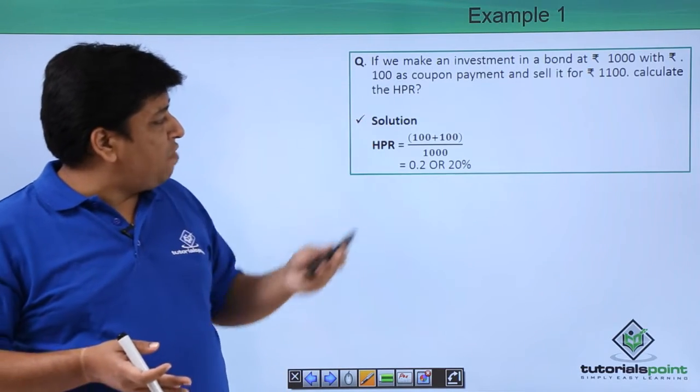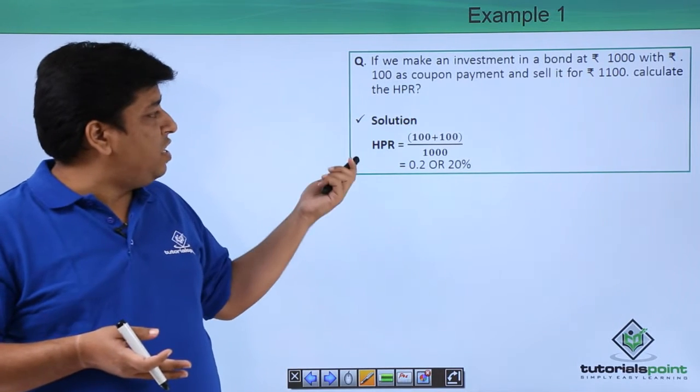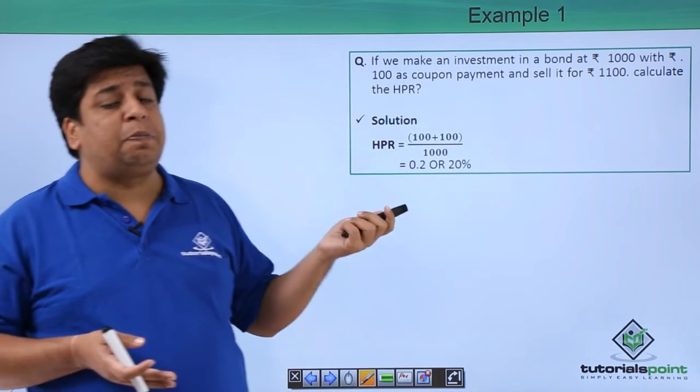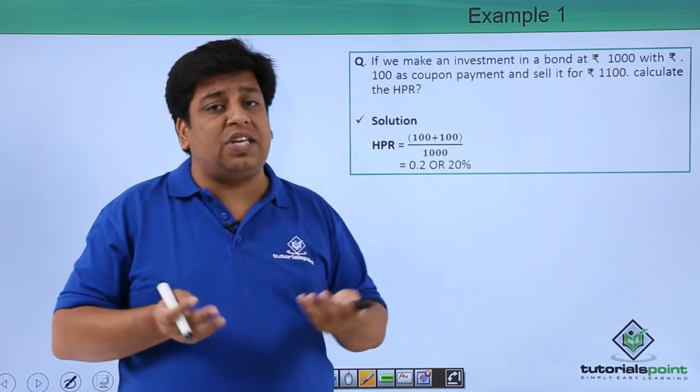If you make an investment in a bond at ₹1000 with ₹100 as coupon payment and sell it for ₹1100, calculate the holding period return. This is a very easy example where we see that at the end of the period, when we are trying to sell this particular bond, we are getting ₹1100.